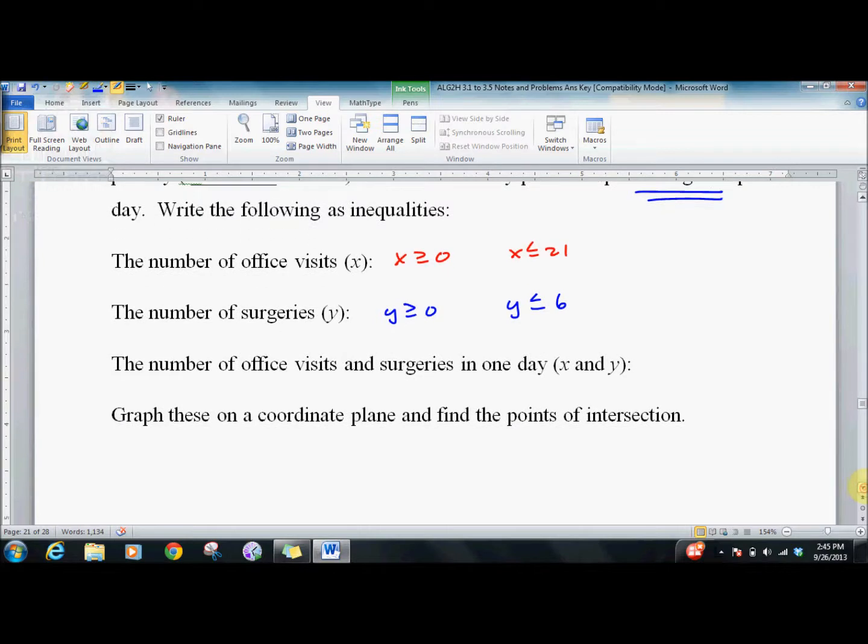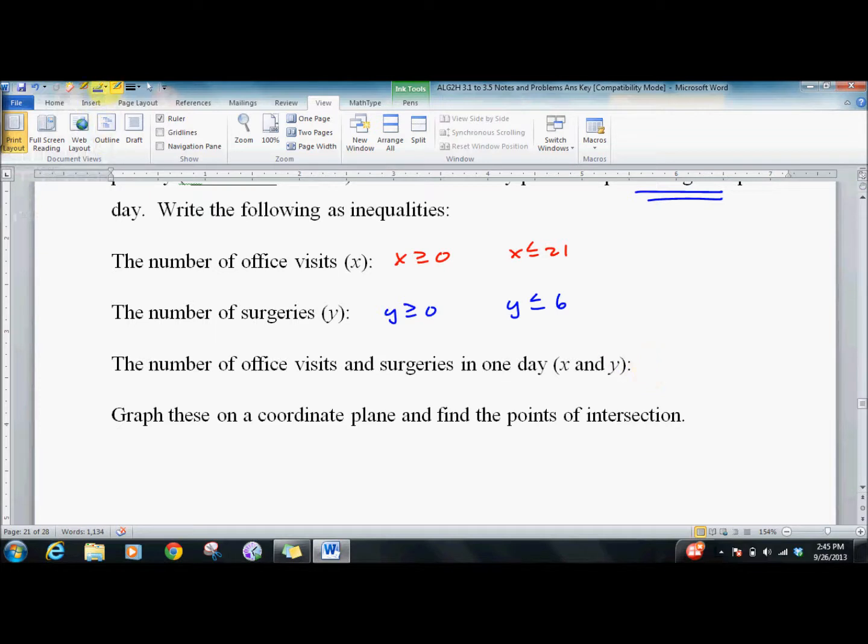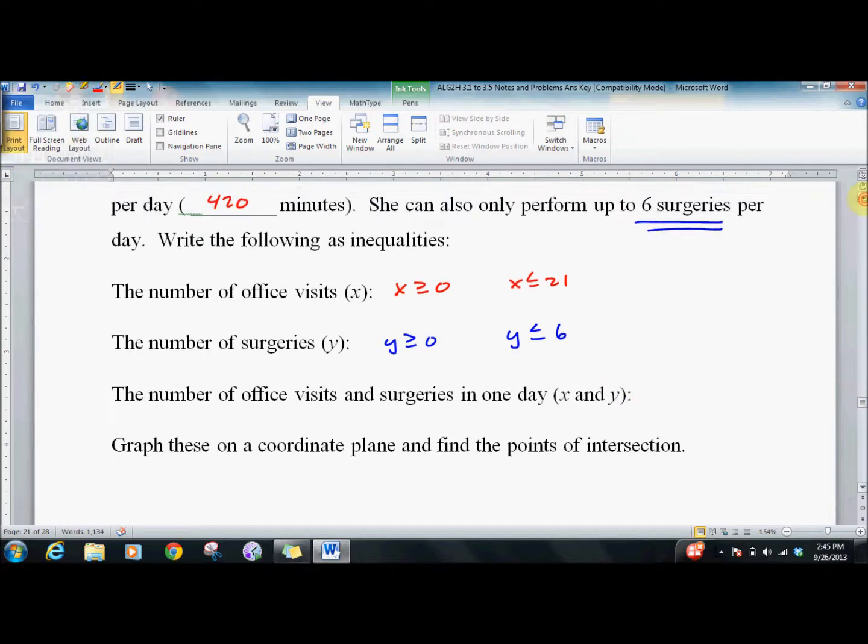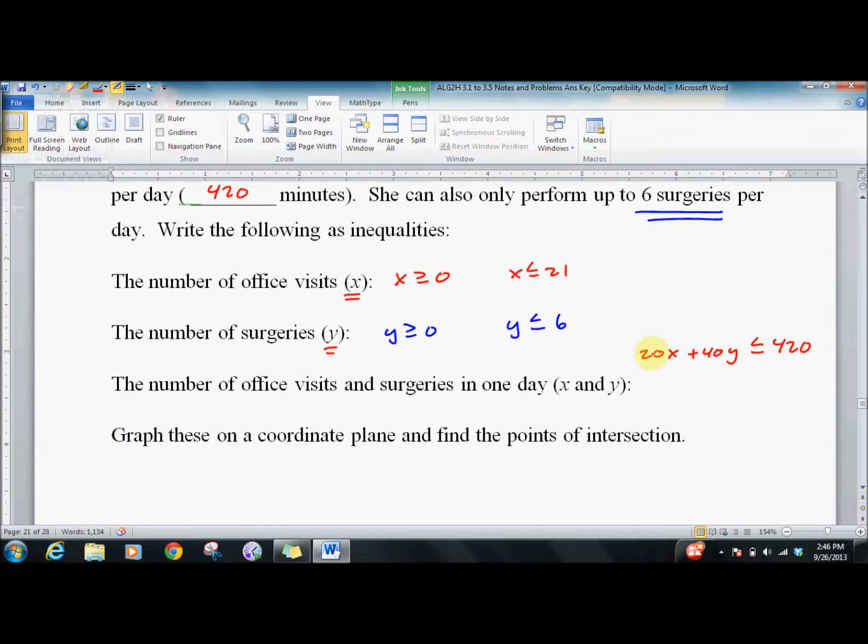We're setting up a system of inequalities. What are the number of office visits and surgeries you can do in one day? We know it takes 20 minutes for an office visit, 40 minutes for surgery. Office visits are x, surgeries are y. So we get 20x plus 40y can fill up her whole day or be less than that. Looking at this, I realize I can divide all these by 20, and I get x plus 2y has to be less than or equal to 21.